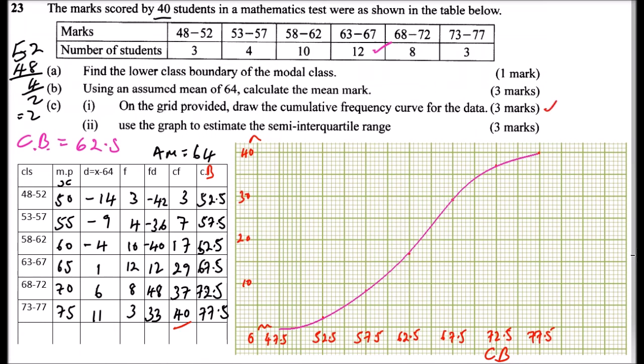So the last part, use the graph to estimate the semi-interquartile range. So, quartile range is when we divide our data into four equal times. And because our total data are 40, the lower quartile is at 10. So we read the value that corresponds to 10, this value here. And if you read that value correctly, you'll be able to get that is around 59. So Q1 is equal to around 59.